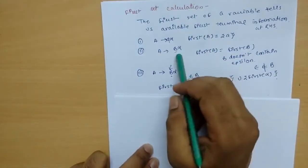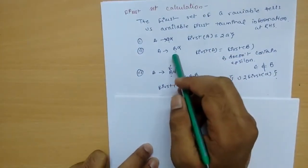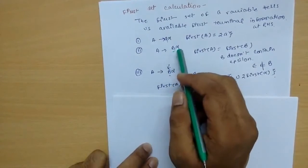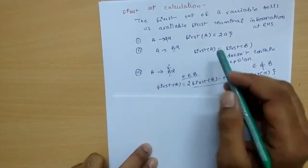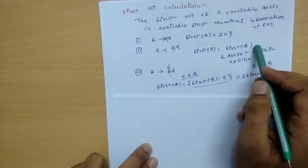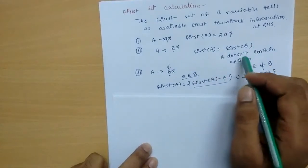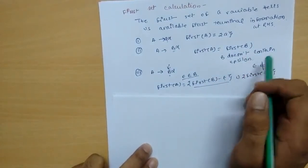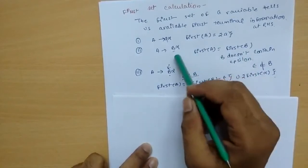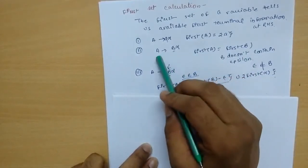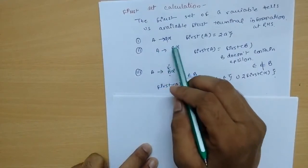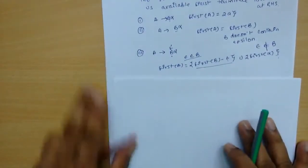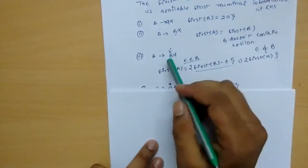Rule 2: suppose we have a production A → B α, where B is a variable, α is a variable, and A is a variable. Assuming that B does not contain epsilon, the first of A will be the same as the first of B.